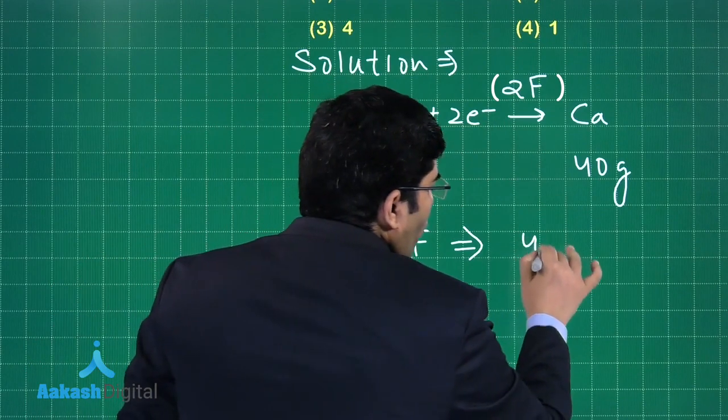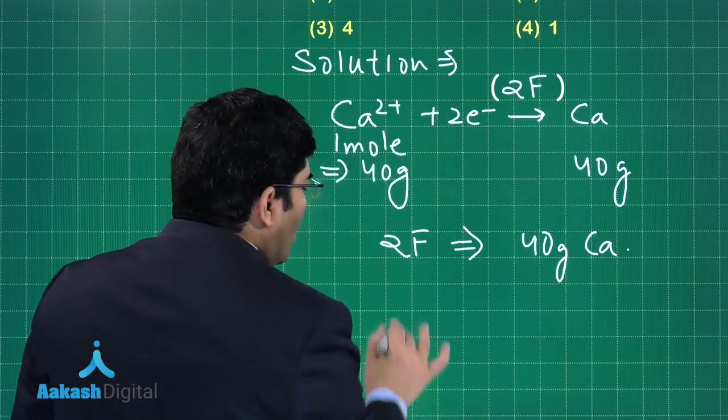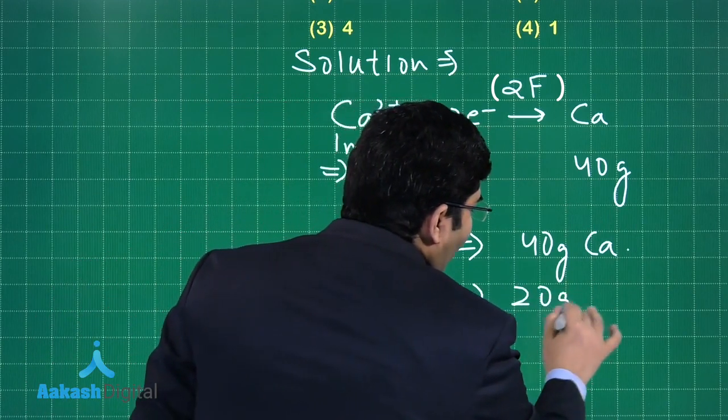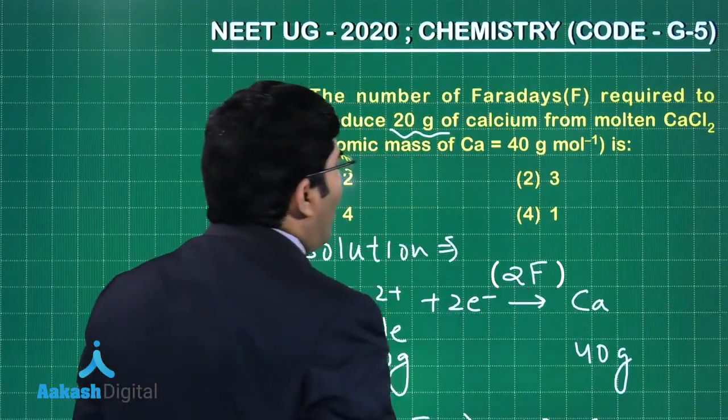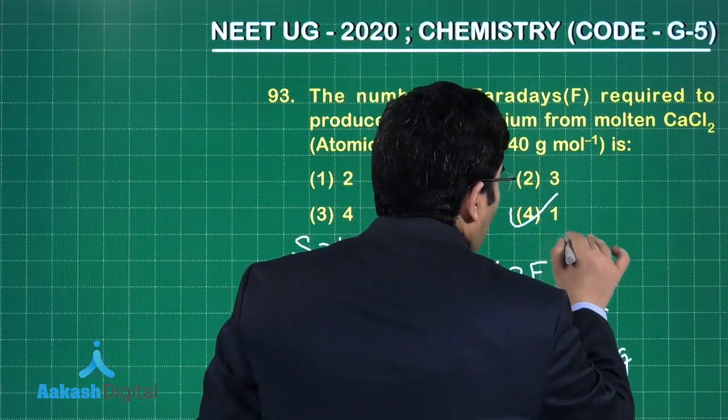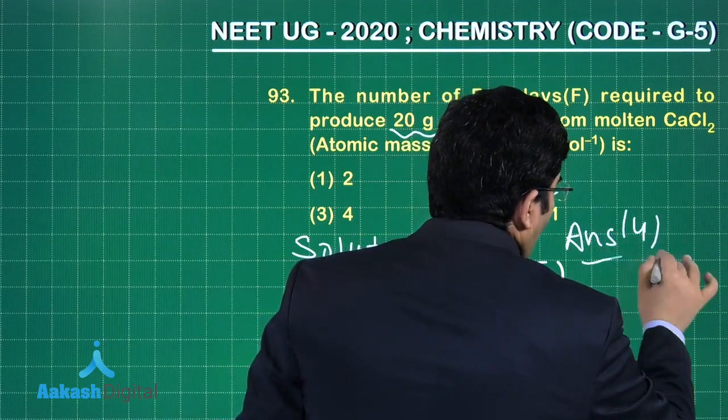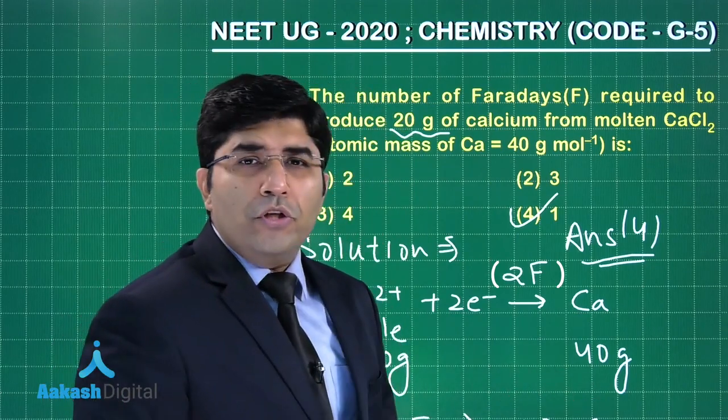Therefore, one Faraday will correspond to 20 grams of calcium, so one Faraday is required. The answer will be option number four. Let's move on to the next question.